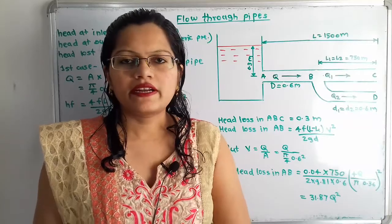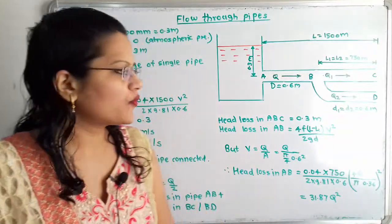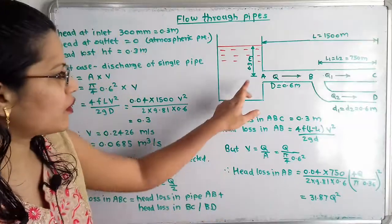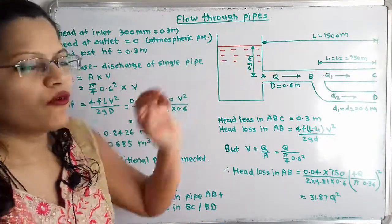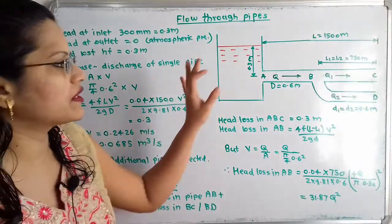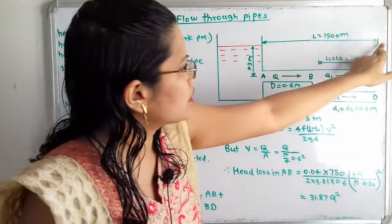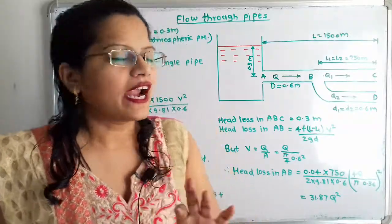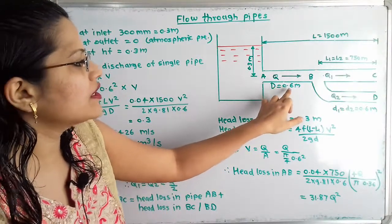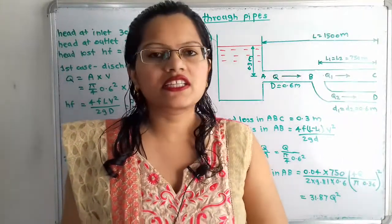Let us first understand the diagram as per the given data. The head at inlet is given, so point A is at the inlet of the pipe. From the center of the pipe, the distance of the water surface is 300 millimeter, which we convert to 0.3 meter. The total length of the pipe is L = 1500 meter, and the diameter is D = 0.6 meter for a single pipe.